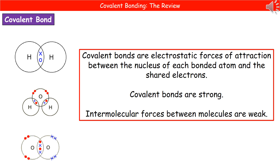One thing we need to be able to do is draw dot and cross diagrams for covalent bonding. A key difference between dot and cross diagrams for covalent bonding and those for ionic bonding is that we only use the outer shell here — you don't have to draw all the inner shells for covalent bonding, but you do for ionic bonding. Looking at the top left diagram, we've got two hydrogens joined by a covalent bond. One always has to be dots and the other crosses. Hydrogen has a single electron, so they share that electron to make the pair. Make sure your orbitals overlap and put your electrons between them as shown.